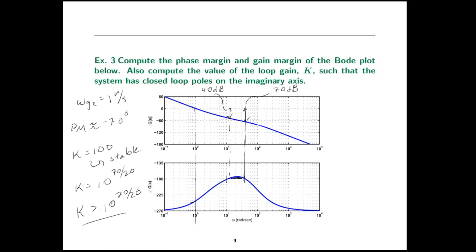To summarize: I introduced what a Bode plot is, what it looks like, how to analyze it, and especially how to pick off the gain margin and phase margin. We also covered how to analyze stability by imagining the gain plot moving up and down and seeing how the phase margin changes. In subsequent videos, we'll see how to sketch Bode plots, how to make them using MATLAB, and how to do design using Bode plots. This is Gordon Parker from Michigan Tech — thanks for watching.